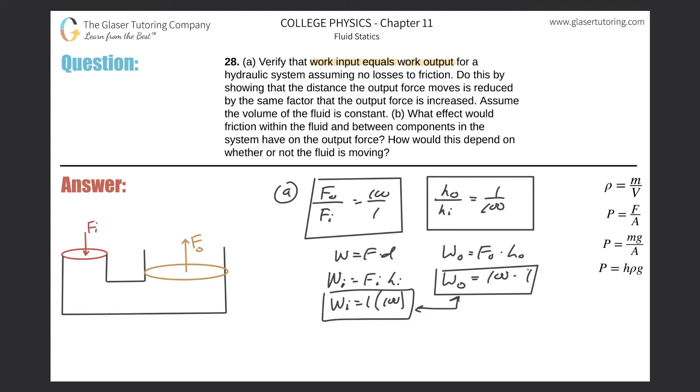Letter B: What effect would friction within the fluid and between components in the system have on the output force? How would this depend on whether or not the fluid is moving? When this piston drops down, it displaces a certain volume of fluid.